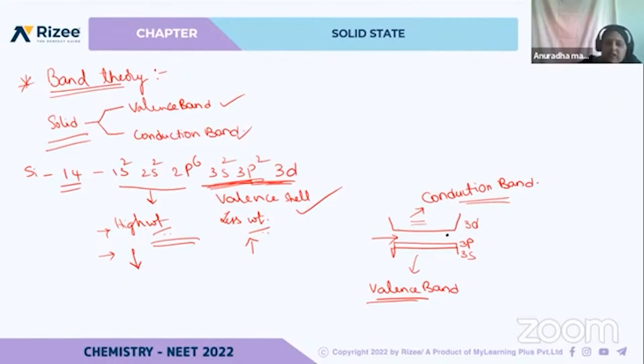And obviously, we are seeing some sort of a gap between these filled and unfilled orbitals. This gap we call it as forbidden gap.